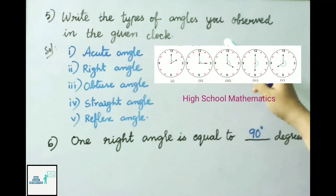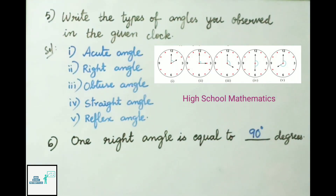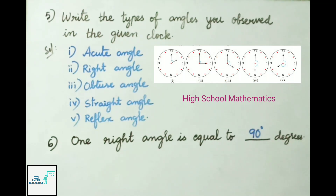Question 5: Write the types of angles observed in the given clock figures. At 2 o'clock, the angle formed is an acute angle. At 3 o'clock, the angle formed is a right angle. At 4 o'clock, the angle formed is an obtuse angle. At 6 o'clock, the angle formed is a straight angle. At 8 o'clock, the angle formed is a reflex angle.